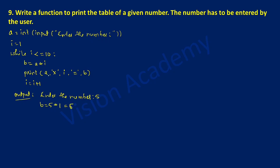5 into 1 is 5. Now the second statement: print. a value is 5, the cross mark will be printed as it is, i value for the first time is 1, the equal to will be printed as it is, and value stored in b is 5. So it will print 5. Here i value will get incremented by 1 — earlier it was 1, now 1 plus 1 it will become 2.